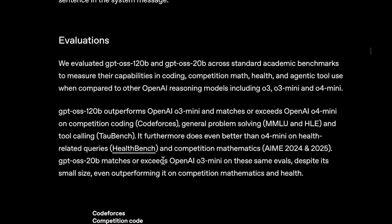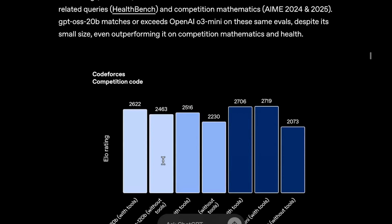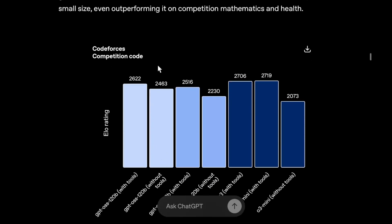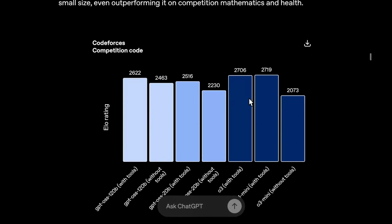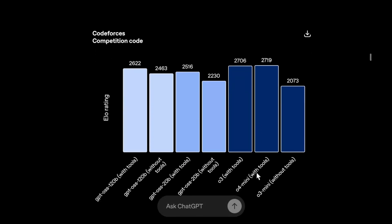Now let's look at some benchmarks. On the Codeforces competition, the best model was O4 mini scoring 2719. GPT OSS 120B scored slightly lower with 2622, and this is with tools.